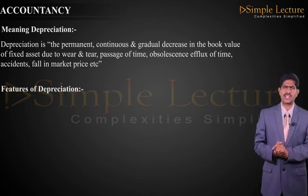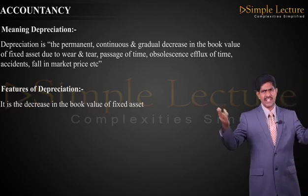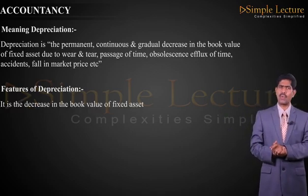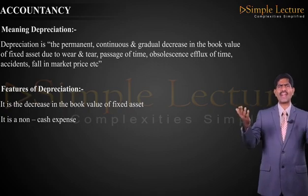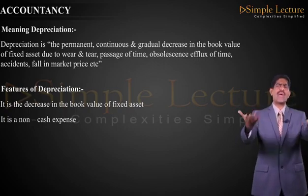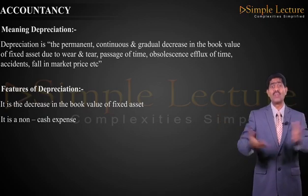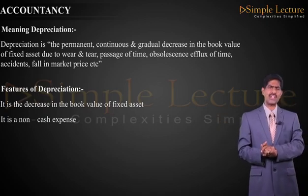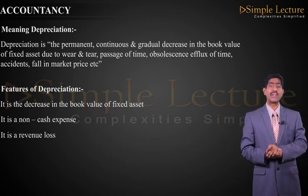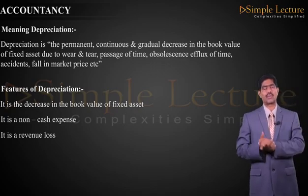Features or characteristics of depreciation: Number one, it is a decrease in the book value of a fixed asset. Number two, it is non-cash — in reality, we don't pay for the decrease in the value of the asset, it happens by itself, so it is a non-cash expenditure. Next, it is a revenue loss and it is not non-recurring — it is recurring.